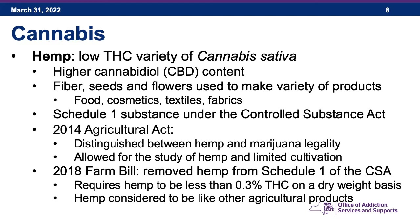Hemp is a variety of the cannabis sativa plant that is low in THC but has higher cannabidiol content. Its fibers, seeds, and flowers are used to make a variety of products including food, cosmetics, textiles, and fabrics. Hemp was actually illegal for a long time — all varieties of the cannabis plant, including hemp, were made illegal under the Controlled Substances Act of 1970.